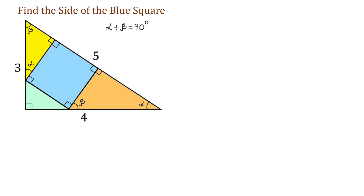Now, what about the green triangle? Take a look at these three angles. If this is beta and this is a 90 degree angle, then this one has to be alpha — because alpha plus beta is 90 degrees, and 90 degrees plus 90 degrees makes 180 degrees. Then, if this angle is alpha, the other one has to be beta.